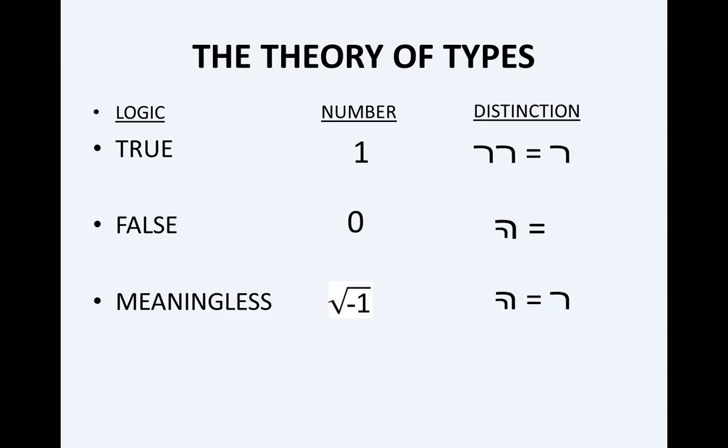There's something called a theory of types, developed by Bertrand Russell and Alfred North Whitehead, where they said there are three different types of statements: they can be true, false, or meaningless. This would be true whether the statement is made in English or in mathematics. True is represented by one, false is represented by zero. So everything can be described in terms of one or zero.